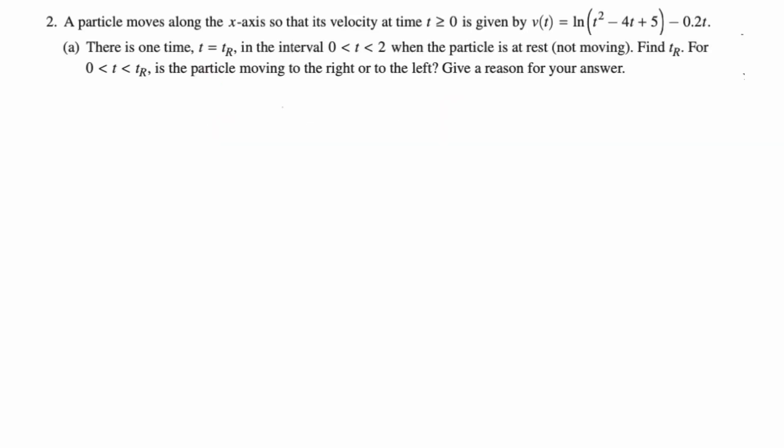All right, this is going to be question number two from the 2024 Calc AB exam. Let's take a look. So a particle moves along the x-axis so that its velocity at time t greater than or equal to zero is given by v of t, which is natural log of the quantity t squared minus 4t plus 5 minus 0.2t. So don't forget that minus 0.2t, which I almost did when I was doing the problem.